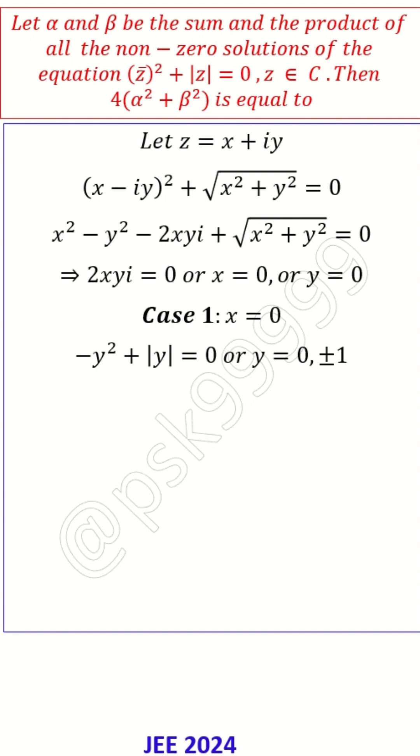I can take absolute y, cancel, and then solve for y. What I will get is y = 0 or ±1. So I need non-zero solutions, so I will consider only ±1, which means solutions for z in case 1 is i or -i.